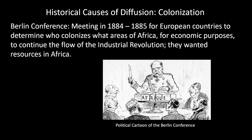Let's get started with the Berlin Conference for colonization. This was a meeting in 1884 to 1885 for European countries to determine who colonizes what areas of Africa. This is for economic purposes, because they are going through the Industrial Revolution, seeing major economic growth and population growth. So they wanted the resources in Africa — gold, ivory, maybe some crops, slaves — to continue their economic growth. They might trade these, manufacture them, or make value-added specialty crops or luxury goods — more Unit 5 concepts.